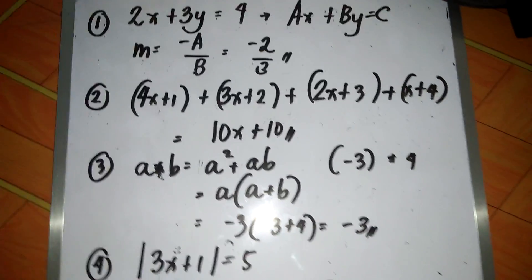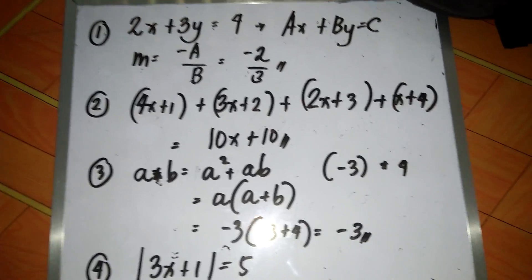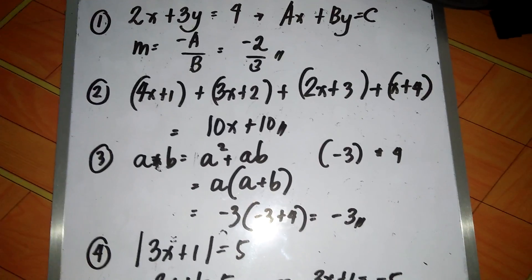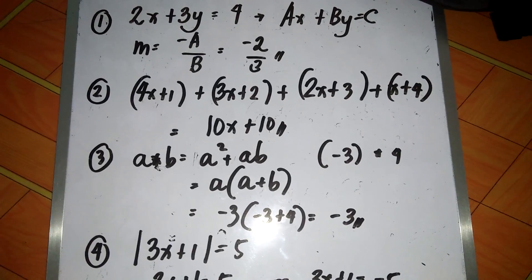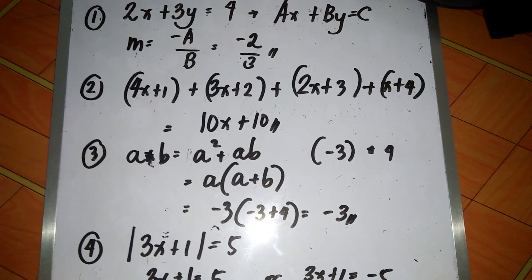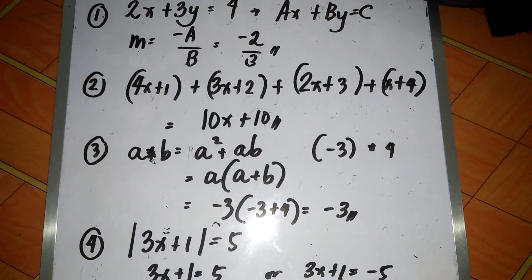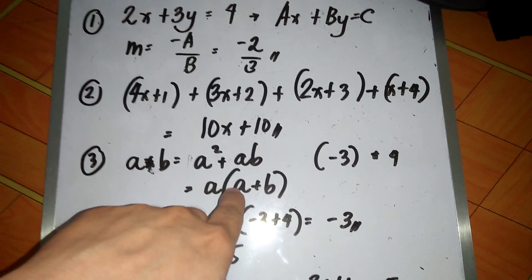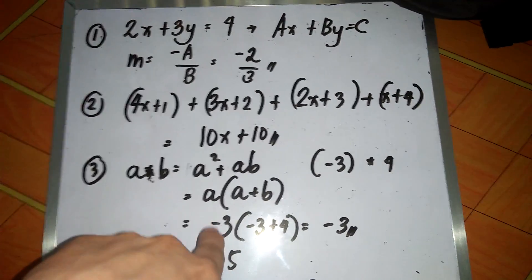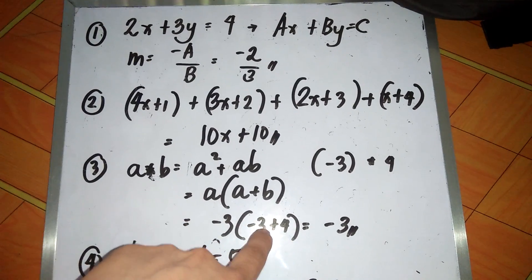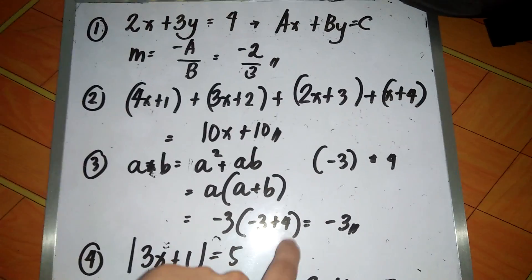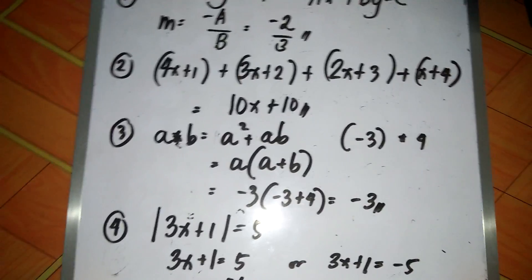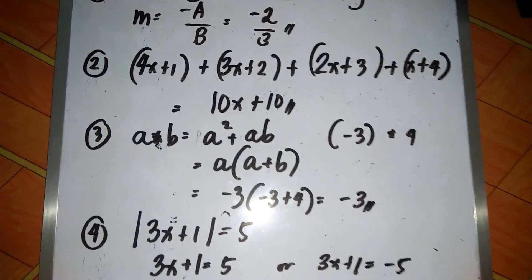For our third question, if a asterisk b is defined as a squared plus ab, then find the value of negative 3 asterisk 4. I think the best possible way for this to be solved mentally is to notice that the a here is factorable, so we have a times a plus b. Then that is negative 3 times negative 3 plus 4, which is now easy to add. Negative 3 plus 4, that is positive 1 times negative 3 equals negative 3.